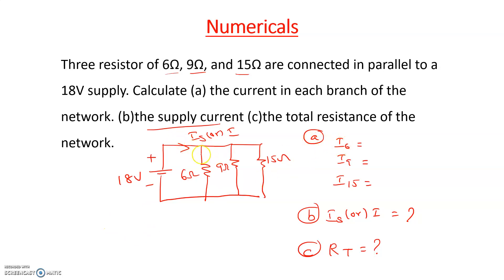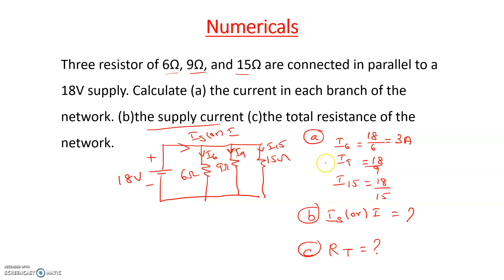Current through the 6-ohm resistor I6 equals 18 volts divided by 6 ohms, which is 3 amperes. Current through the 9-ohm resistor I9 equals 18 divided by 9, which is 2 amperes. Current through the 15-ohm resistor I15 equals 18 divided by 15, which is 1.2 amperes. These are the branch currents.